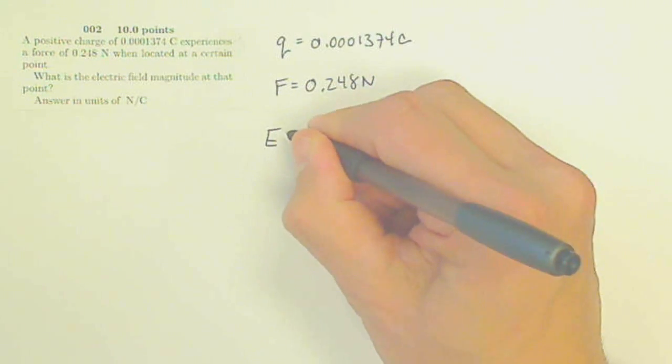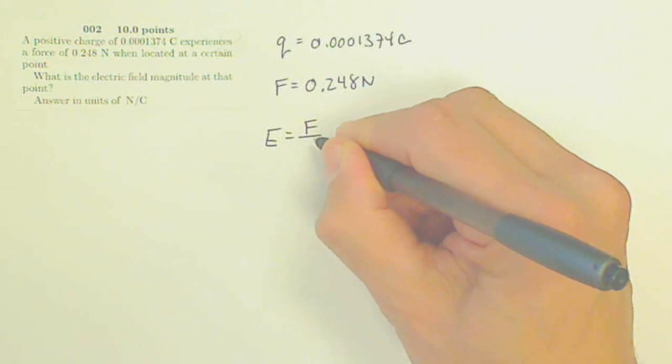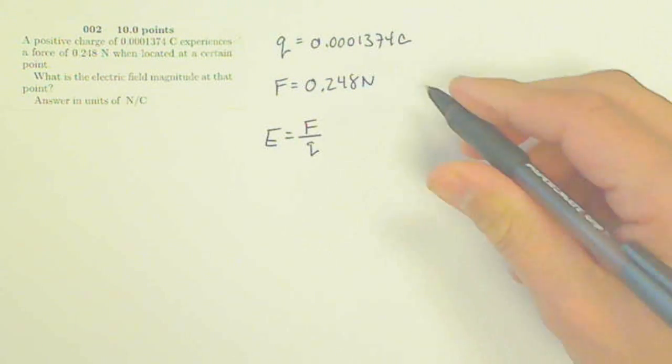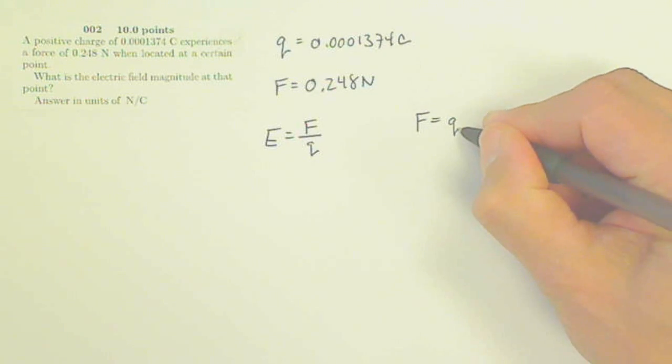My electric field strength is how much force a certain charge would have. It's my force per charge. Similarly, my force is going to be the amount of charge times the electric field strength.